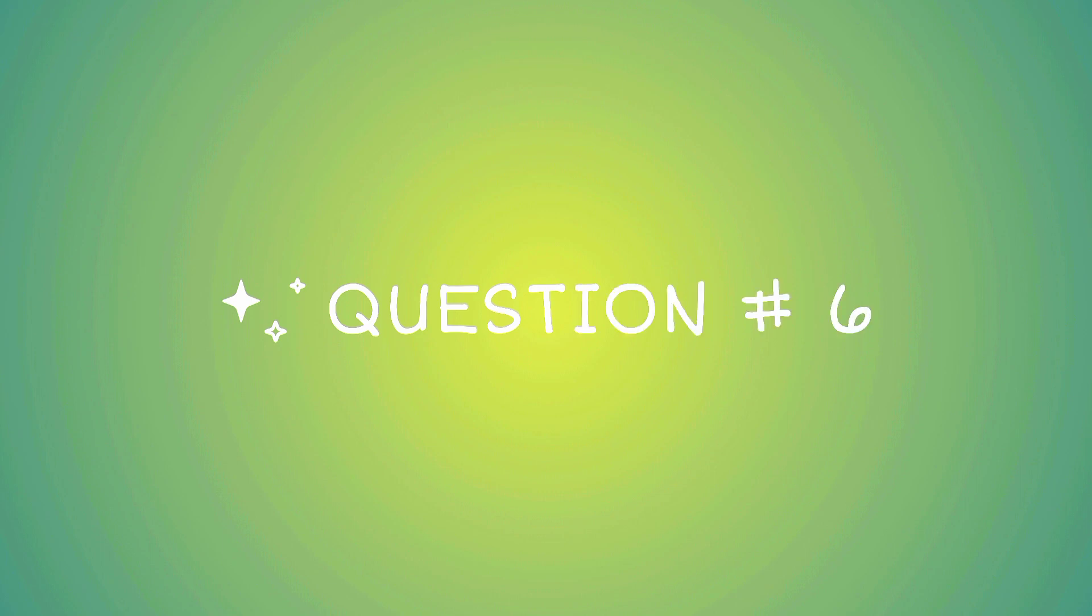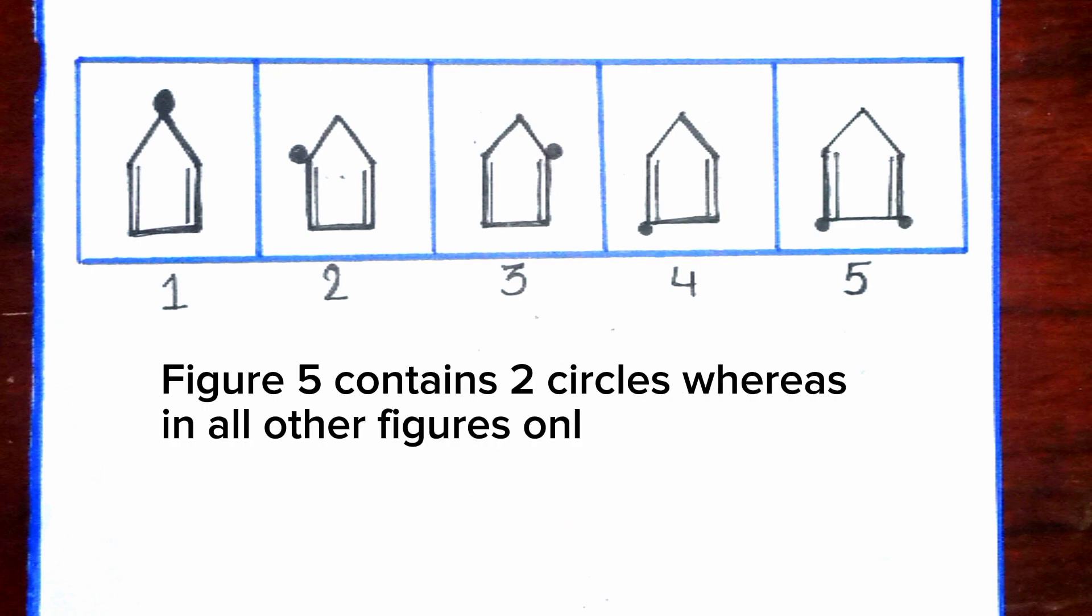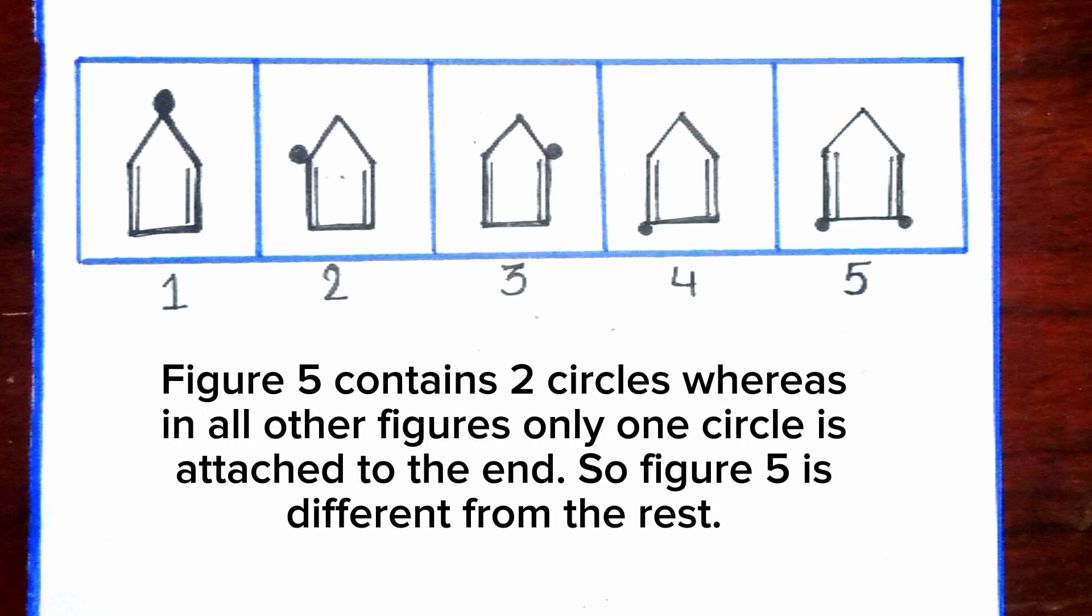Question number six. Figure five contains two circles, whereas in all other figures only one circle is attached to the end. So figure five is different from the rest.